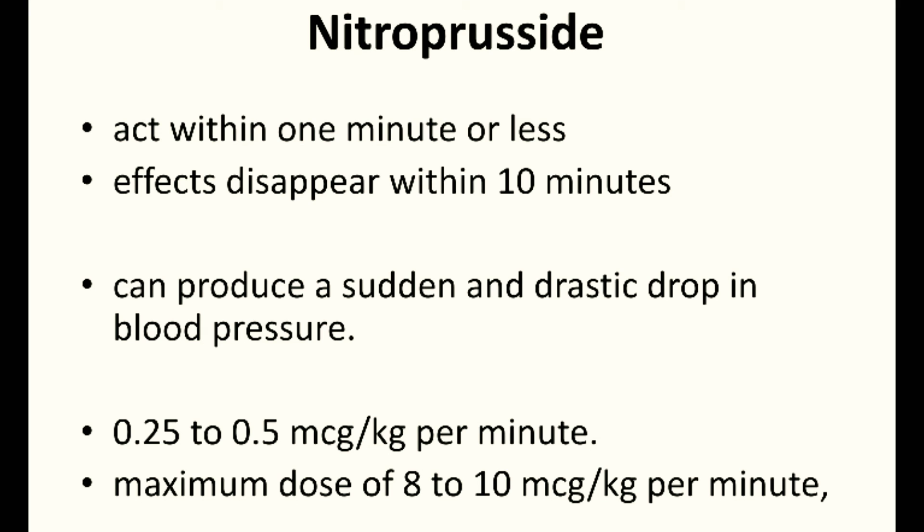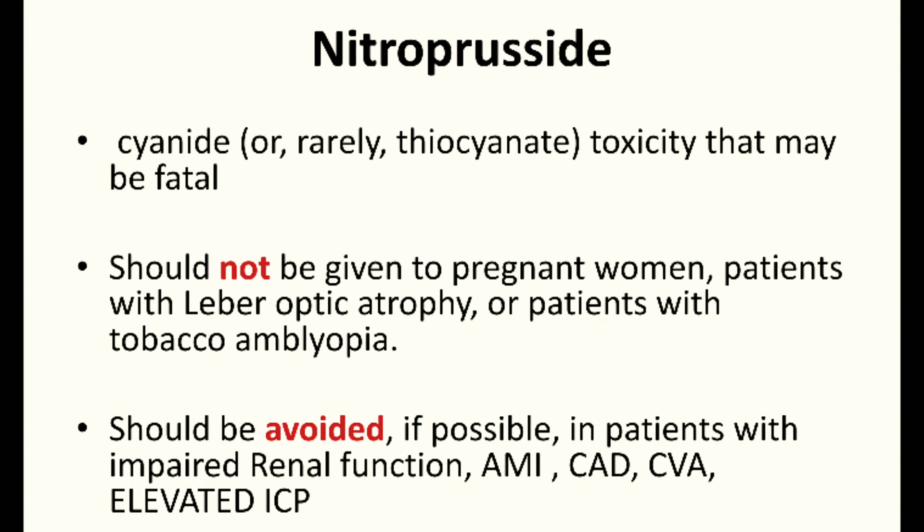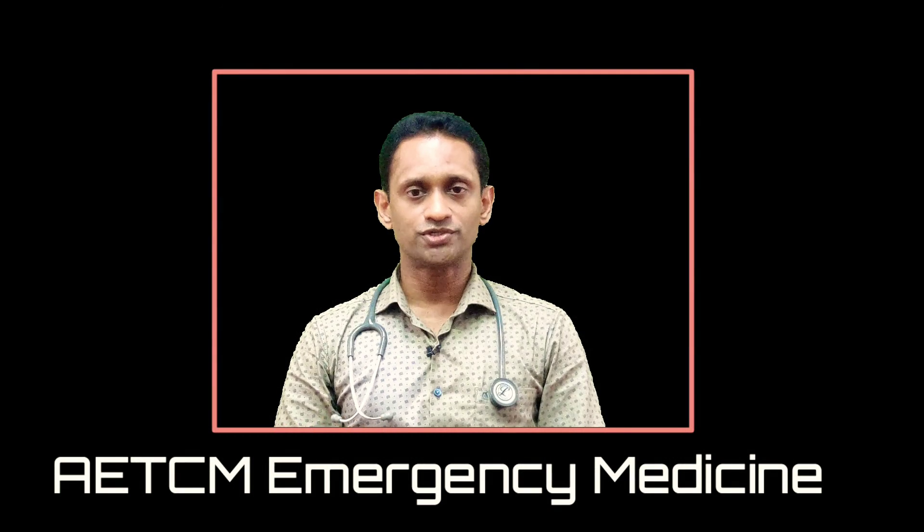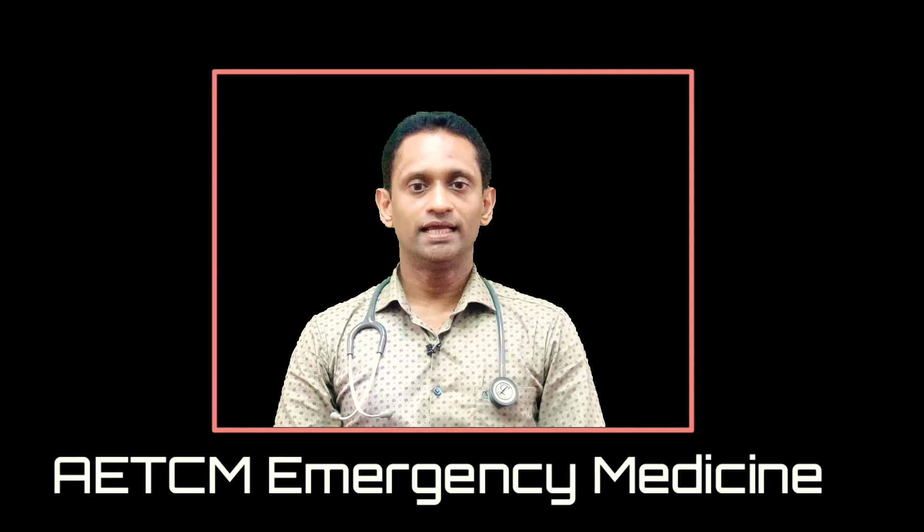Nitroprusside can produce a sudden and drastic drop in blood pressure, so intensive monitoring is required. The usual dosage is 0.25 to 0.5 micrograms per kg per minute, up to a maximum of 8 to 10 micrograms per kg per minute — but not for more than a few minutes due to the risk of cyanide toxicity. It should not be given to pregnant women, patients with Leber's optic atrophy, or tobacco amblyopia. It should be avoided in impaired renal function, acute MI, CAD, or CVA, and ideally avoided in neurological emergencies as it can increase intracranial pressure.